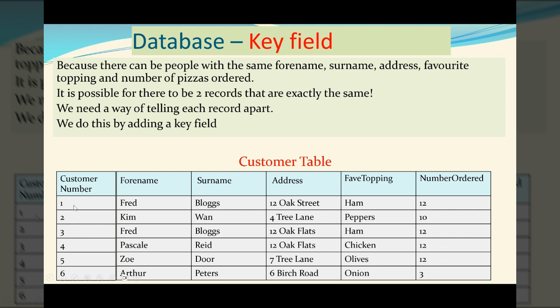And when we create the key field, we create some rules that would stop us having two key field numbers the same. So if somebody tried to enter customer one again when it should be customer number seven, the rule would tell us we have an error. You can't have two customer numbers the same.